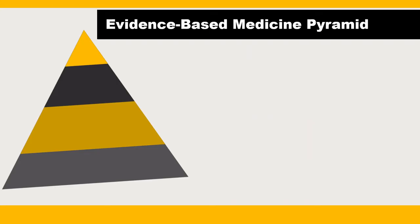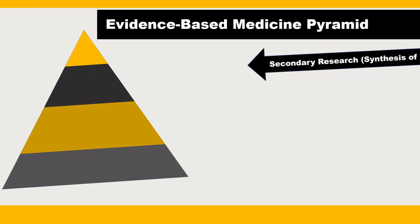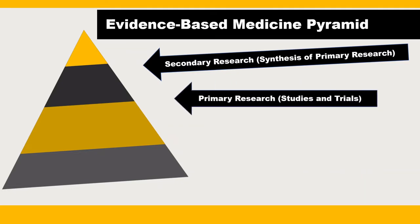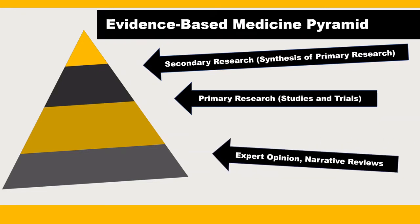You may be familiar with the evidence-based medicine pyramid. There are a couple of different versions, but usually you'll find secondary research like systematic reviews, meta-analyses, and clinical practice guidelines near the top, because these are syntheses of study data. Primary studies like randomized controlled trials and controlled clinical trials toward the middle, and narrative reviews and expert opinion toward the bottom.